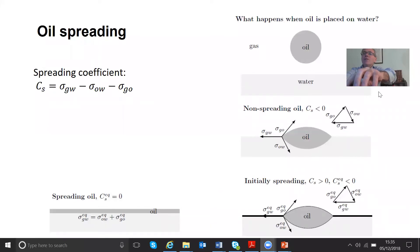So in terms of the theory, what happens when oil is placed on water? Here will be my droplet of oil that I'm going to place on my water. We can define a spreading coefficient. The spreading coefficient is the interfacial tension between gas and water minus that between oil and water minus that between gas and oil.